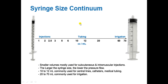Regarding syringe size continuum, smaller volume syringes are mostly used for subcutaneous or IM injections. Larger syringe sizes provide lower pressure flow. The 10 to 20 ml syringe is commonly used for central line catheters and medical tubing, while 20 to 70 ml syringes are commonly used for irrigation.